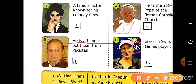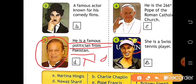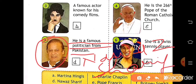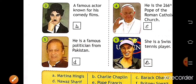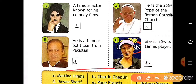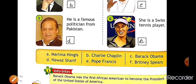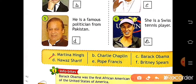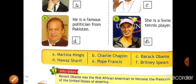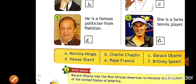Number five: he is a famous politician from Pakistan — so he is Nawaz Sharif. Write Nawaz Sharif here. Nawaz Sharif is at position D, so write D in the box.